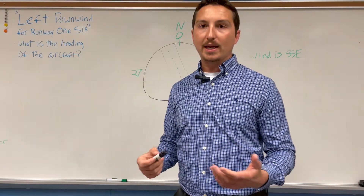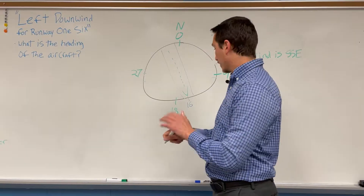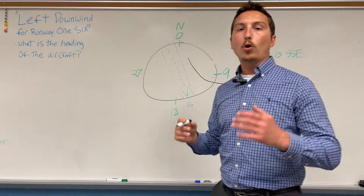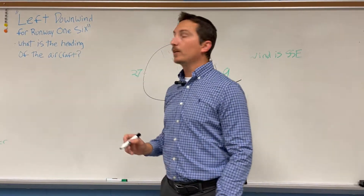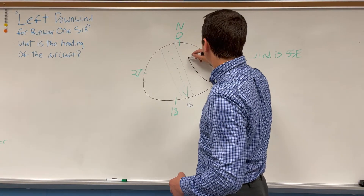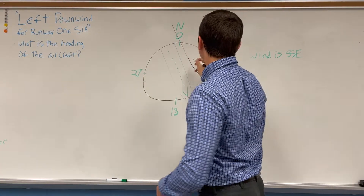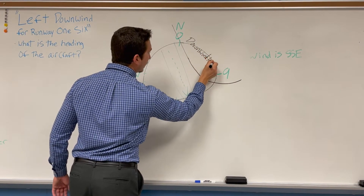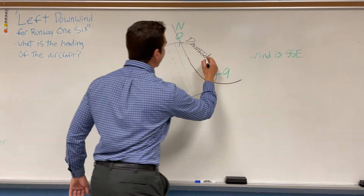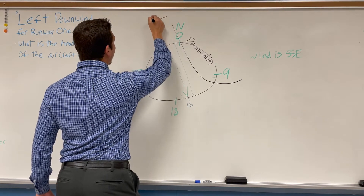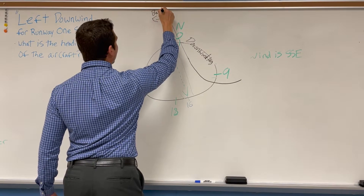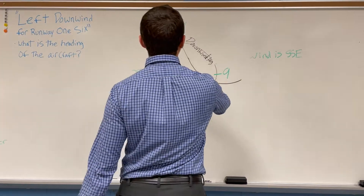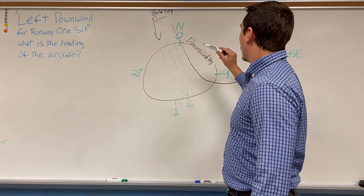When a plane is preparing to land, there's a standard procedure it follows. The plane comes in at a 45-degree angle into the downwind leg. That's what 'downwind' in the announcement means — it's part of the landing procedure. The plane flies the downwind leg, then turns onto the base leg, then makes another turn onto the final approach, and that's when it lands.